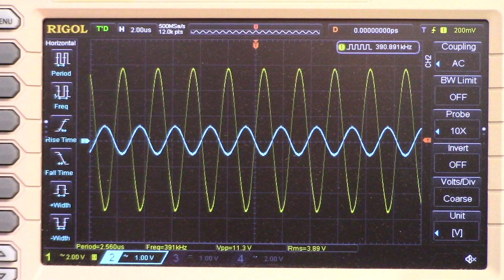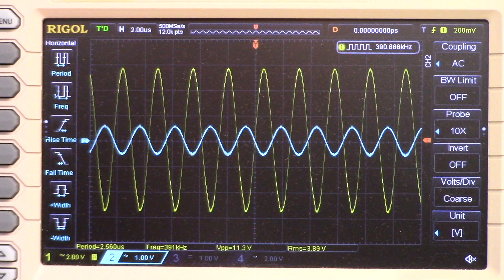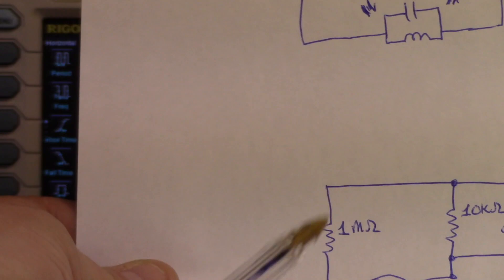When you throw this together on the breadboard, you get the following results. The blue trace is the trace at the base of the transistor. So that's the trace right there.